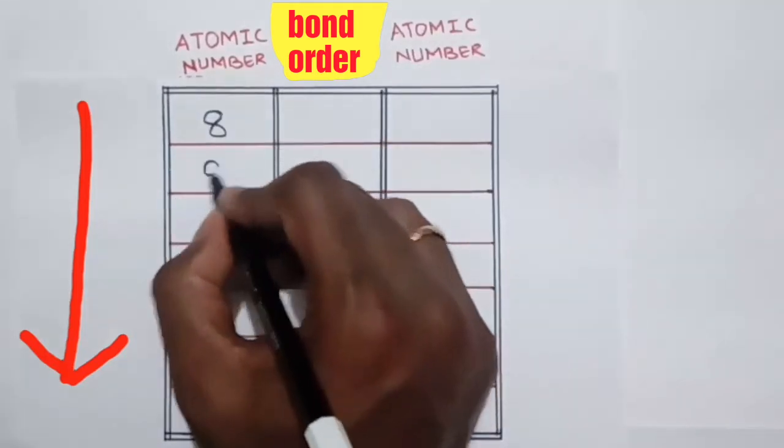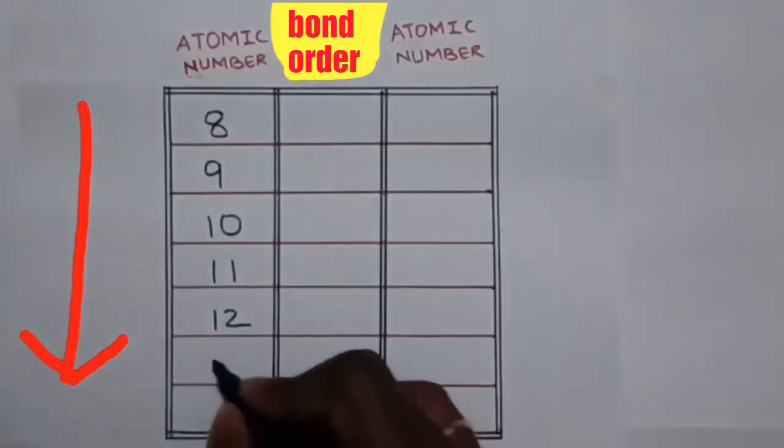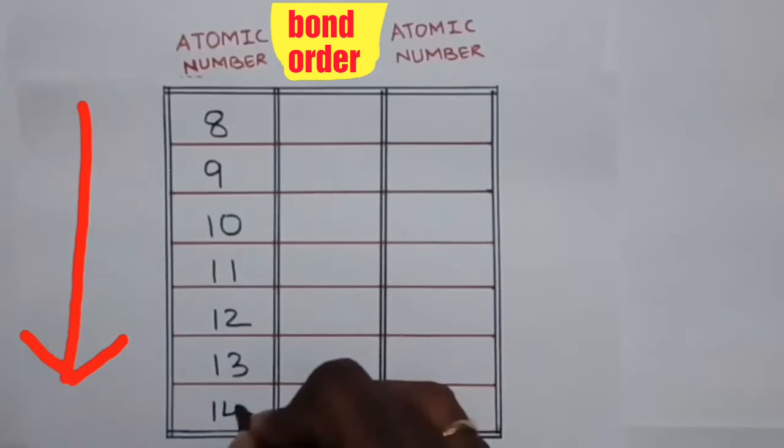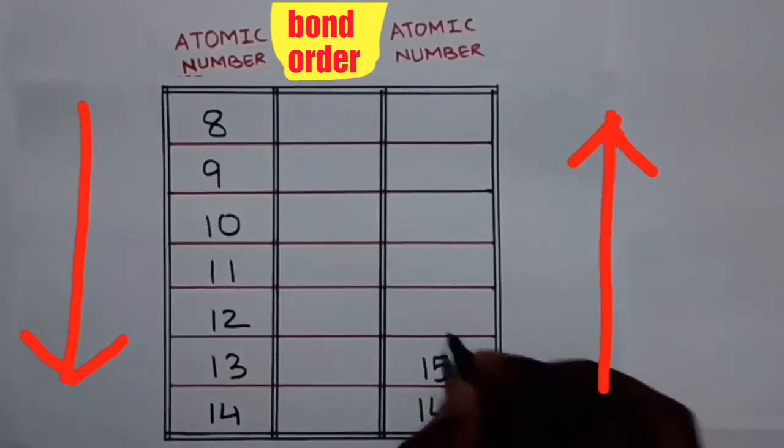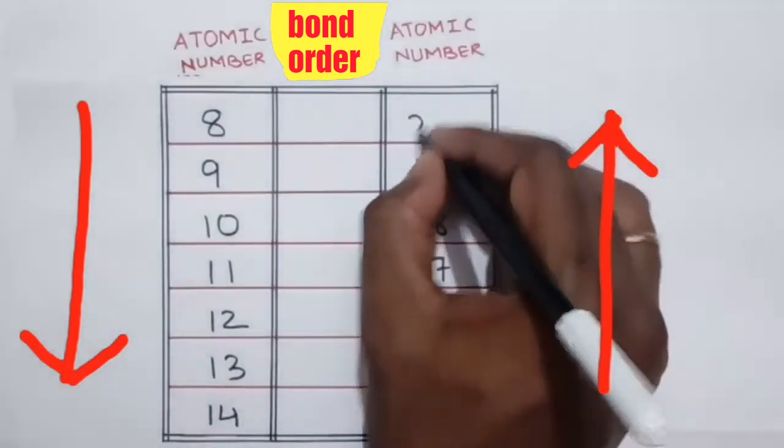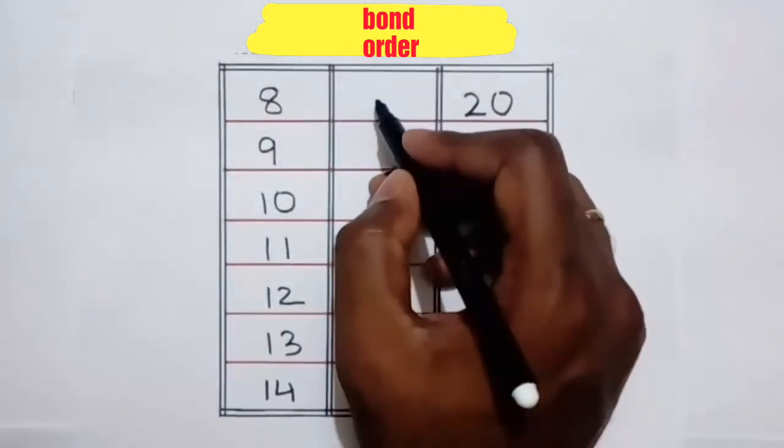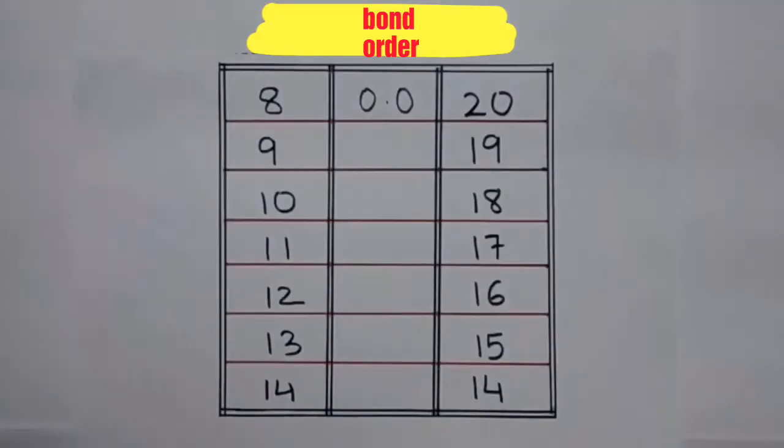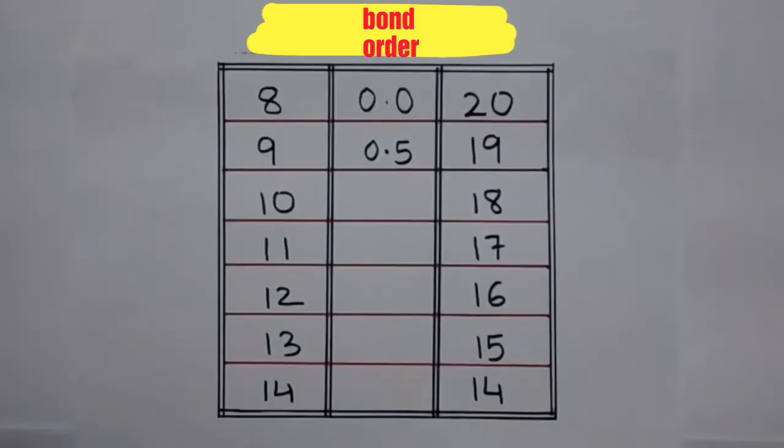8, 9, 10, 11, 12, 13, 14. In the middle column, we will start writing the bond order. In the first row, we will start with 0 bond energy. In the second row, we will put 0.5. In general, we are going to add 0.5 as we move down the column.